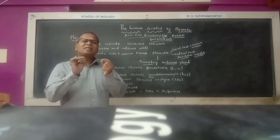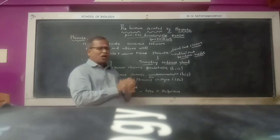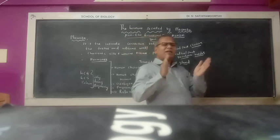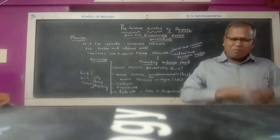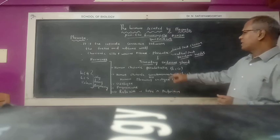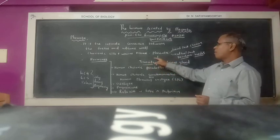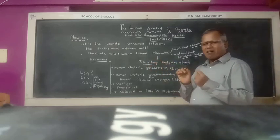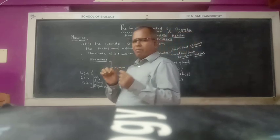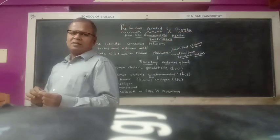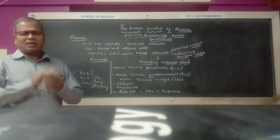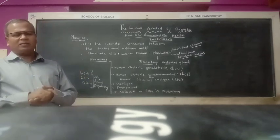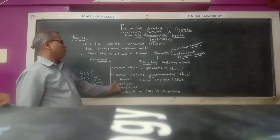At the time of pregnancy and childbirth, placenta acts as a transitory endocrine organ and secretes these hormones.